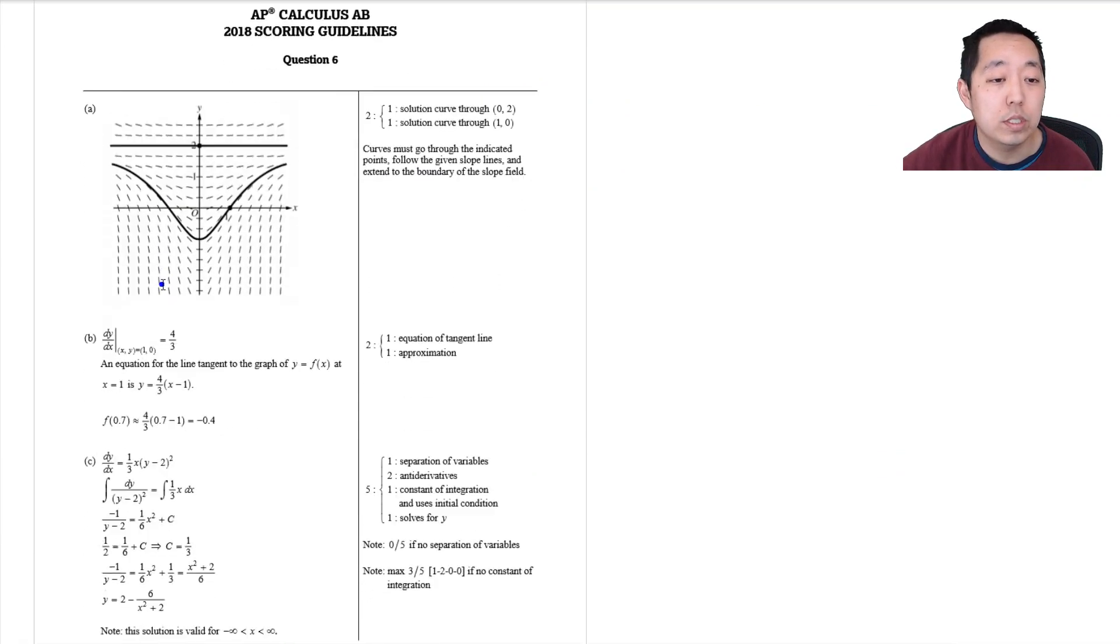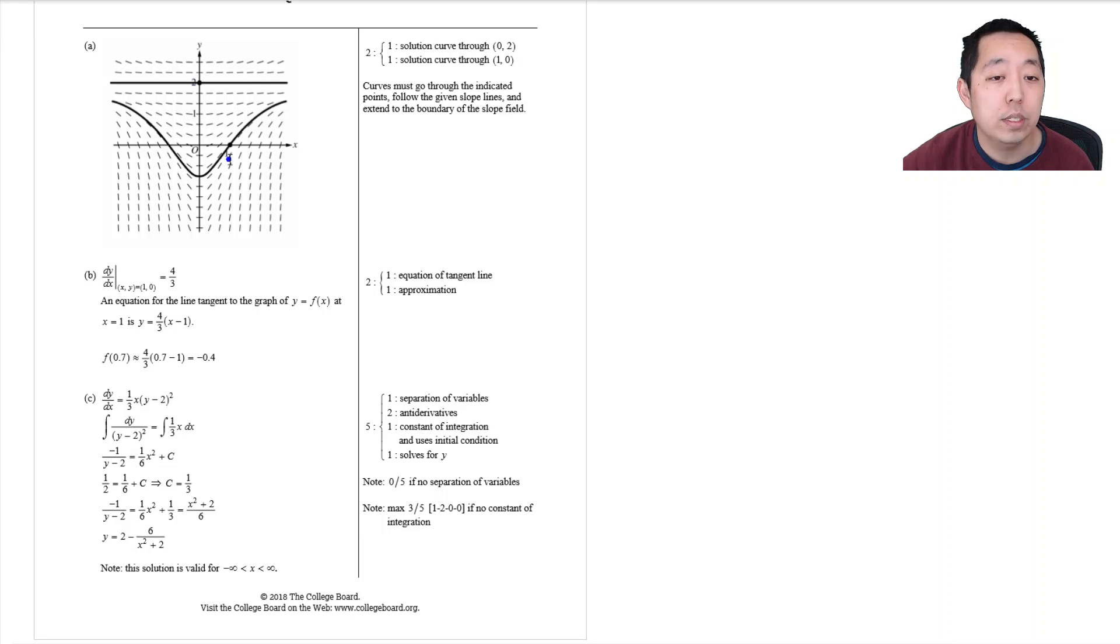Alright. Let's see how we did compared to the solutions. This looks right. Four thirds and minus 0.4. And then two minus six over x squared plus two.